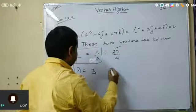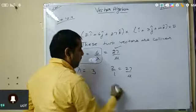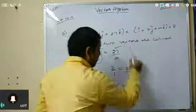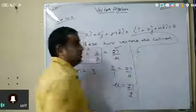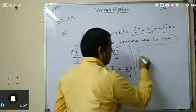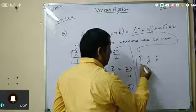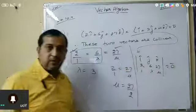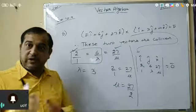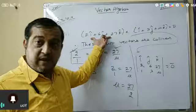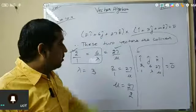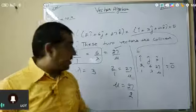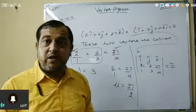There is another method using the cross product determinant. The cross product equals zero means the determinant with rows i, j, k and components 2, 6, 27 and 1, lambda, mu equals zero. Recall that a determinant equals zero when two rows or two columns are identical.